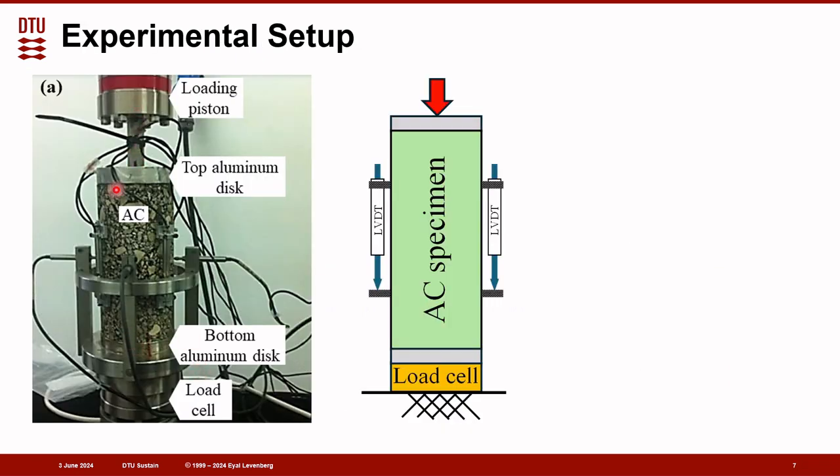This is a picture of the experimental setup, where you can see an asphalt concrete specimen, LVDTs attached to the surface of the cylinder and then the load cell at the bottom, and the piston is connected rigidly to apply tension-compression cycles. So this is a sketch of the setup.